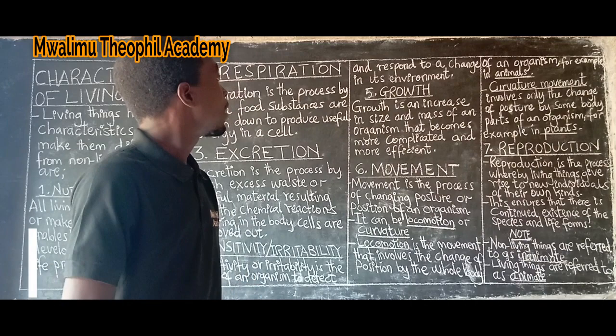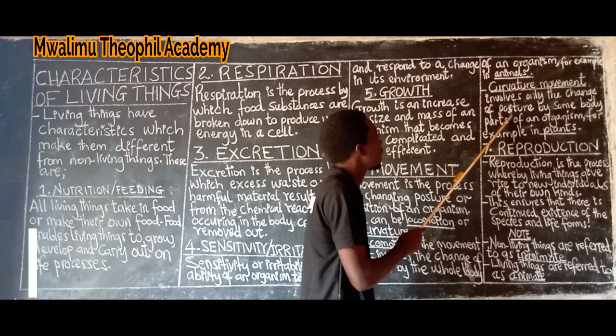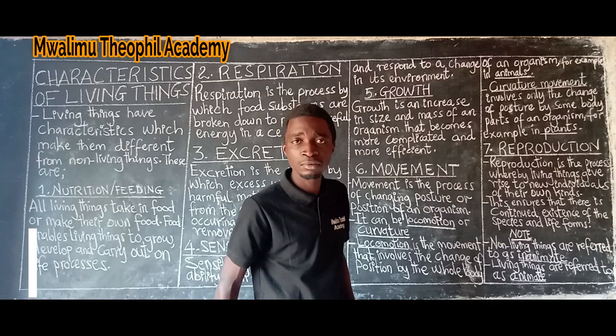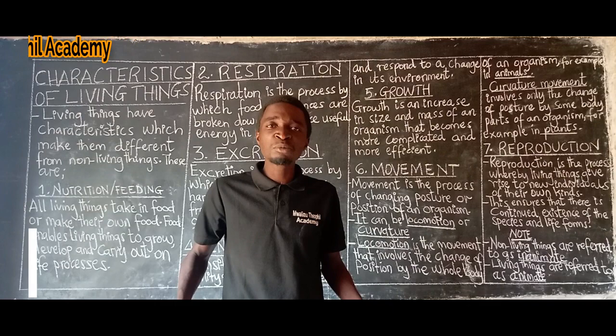Curvature movement is the type of movement which involves the change of posture by some body parts of an organism, and it occurs mostly in plants. Posture refers to the way an organism looks or holds itself.